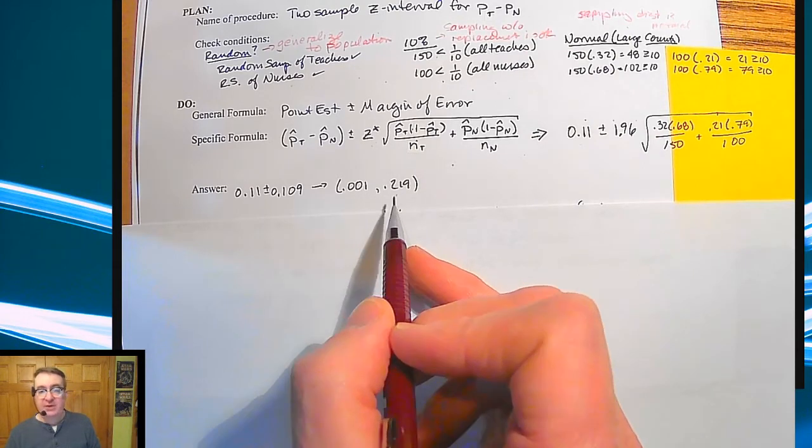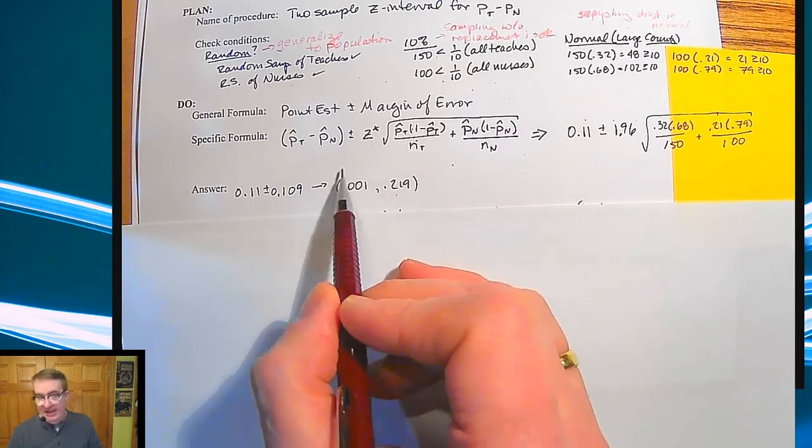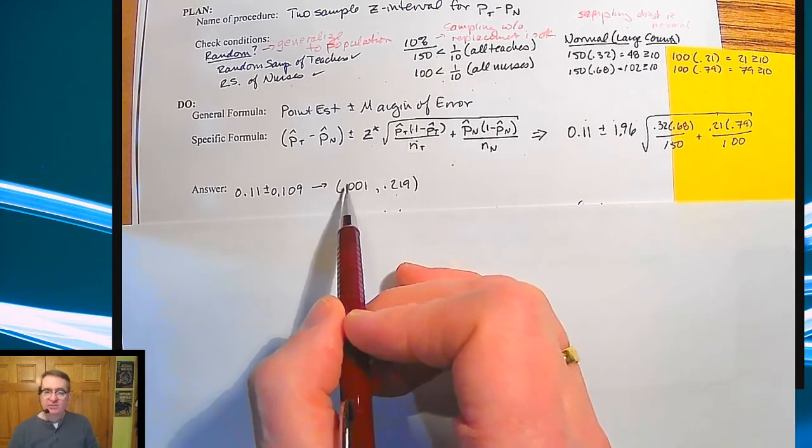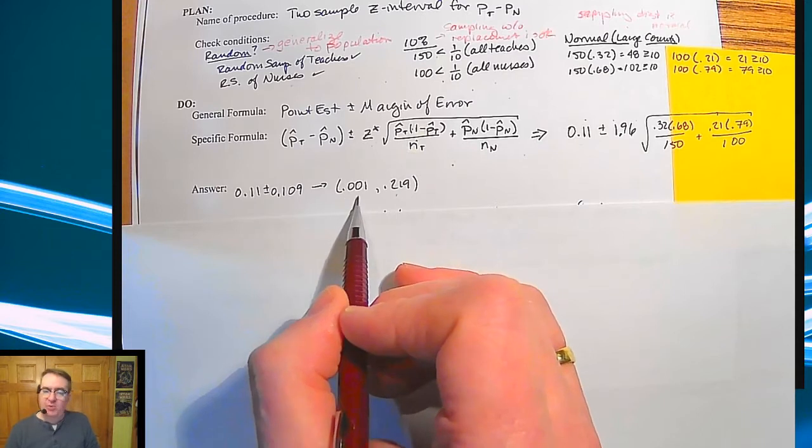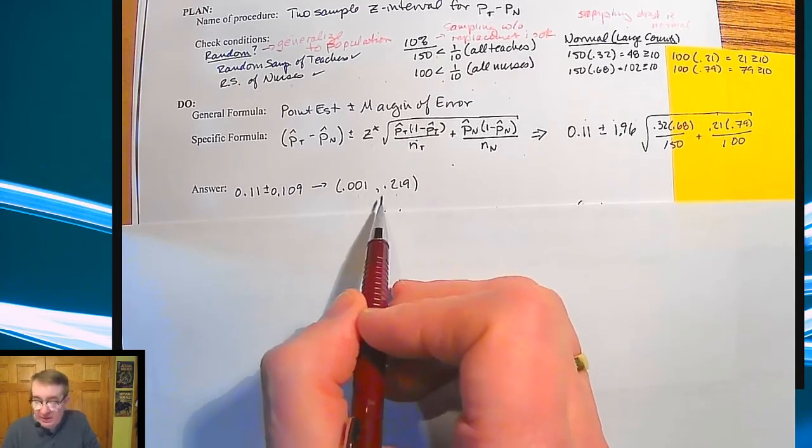So since these are both positive, we would say teachers definitely tend to have second jobs more than nurses do. Now, we'll talk a little bit more. It's up to you kind of saying, is 0.1% really that significant? We'll talk more about that as we go. But at least everything's positive.